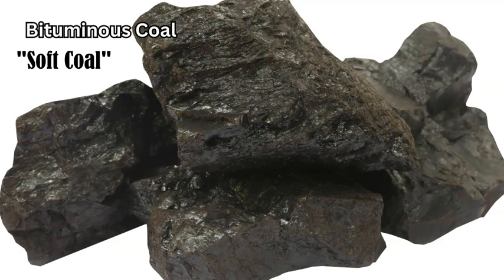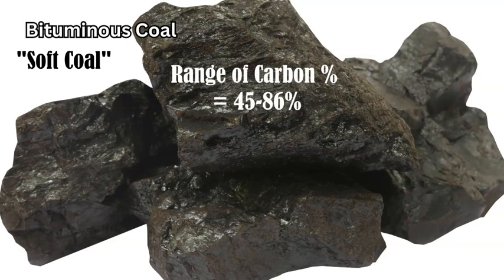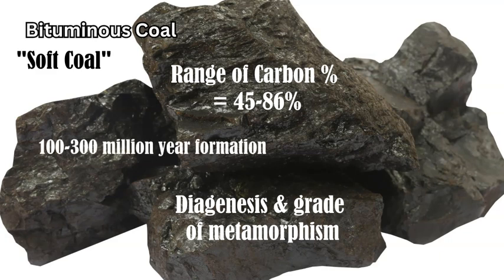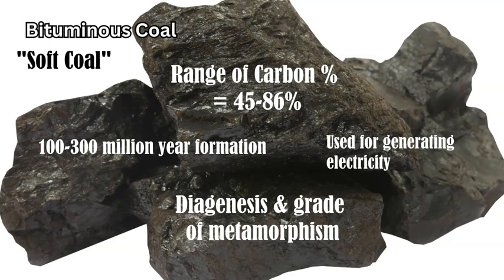The next level down is bituminous coal. This is a soft coal compared to anthracite, which is hard coal. The classification comes from the amount of carbon content — bituminous has a range of 45 to 86 percent carbon. This relates to the diagenesis and formation process, which can take between 100 to 300 million years.